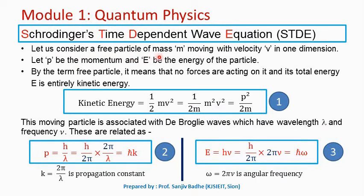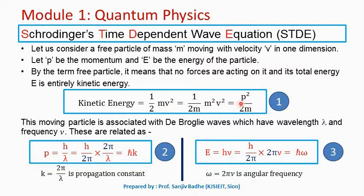Let us first consider a free particle of mass m moving with velocity v in one dimension. We will be doing the discussion in one dimension only. Let P be the momentum of the particle and E be the energy. A free particle means there are no forces acting on it and its total energy is only the kinetic energy. Kinetic energy can be written as (1/2)mv², which equals P²/2m. Let us call this equation number 1.